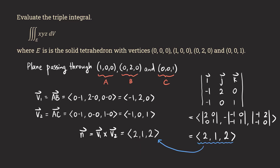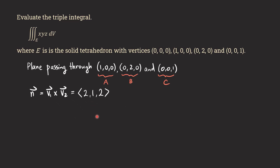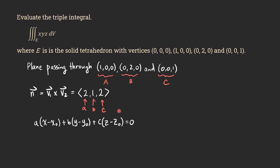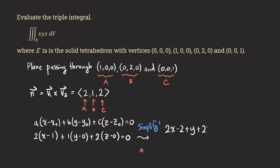We put down the normal vector. The next thing is to write down the general form of the equation for the plane, where lowercase a, b, c are the coordinates of the normal vector — that's 2, 1, and 2. For x-naught, y-naught, z-naught we pick one of the points that lies in the plane; I choose (1,0,0). After simplifying, we get the plane equation: 2x + y + 2z = 2.